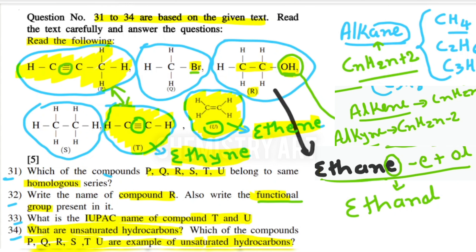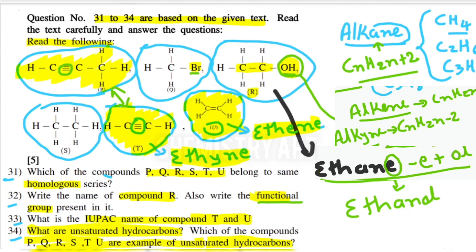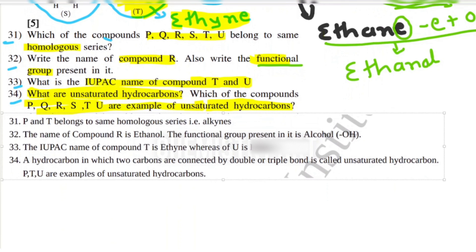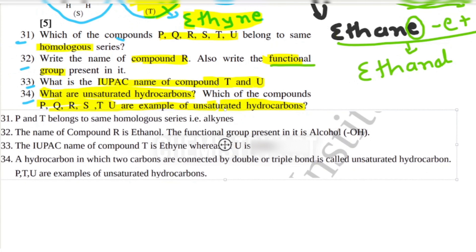If you haven't subscribed yet, please subscribe to my channel because I will continuously add this kind of question. You can check all the answers on screen: question 31 answer is P and T, question 32 is ethanol with hydroxyl functional group, question 33 is ethyne and ethene, and question 34 is P, T, and U. I hope you liked the video — please press the like button and subscribe for more videos. Just do the thing like a pro in chemistry with Chemistry Art. Thank you very much.